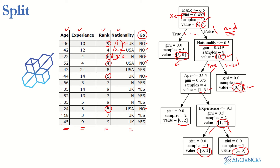For example, given a data point with age 74, experience 7, rank 8, and nationality 1 — should we say yes or no? We traverse the tree: rank is 8, which is greater than 6.5, so we go to the nationality check. Nationality 1 is not less than or equal to 0.5, so we go to the false branch and predict 'yes.' We never even needed to look at age or experience.